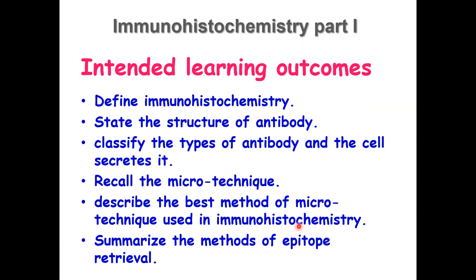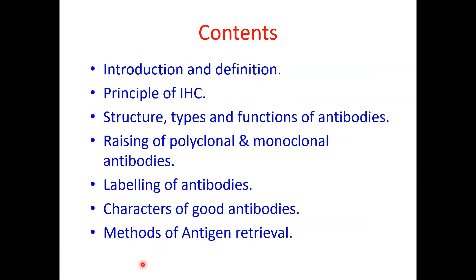We will describe what can be detected. A major advance in immunohistochemistry came when we were able to apply the immunohistochemistry technique to the paraffin technique. We will conclude with the very important topic of methods of epitope retrieval for paraffin-embedded slides and tissues. Let's begin with the introduction and definition.